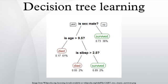In a decision tree, all paths from the root node to the leaf node proceed by way of conjunction, or AND. In a decision graph, it is possible to use disjunctions to join two or more paths together using minimum message length. Decision graphs have been further extended to allow for previously unstated new attributes to be learned dynamically and used at different places within the graph. The more general coding scheme results in better predictive accuracy and log loss probabilistic scoring. In general, decision graphs infer models with fewer leaves than decision trees.